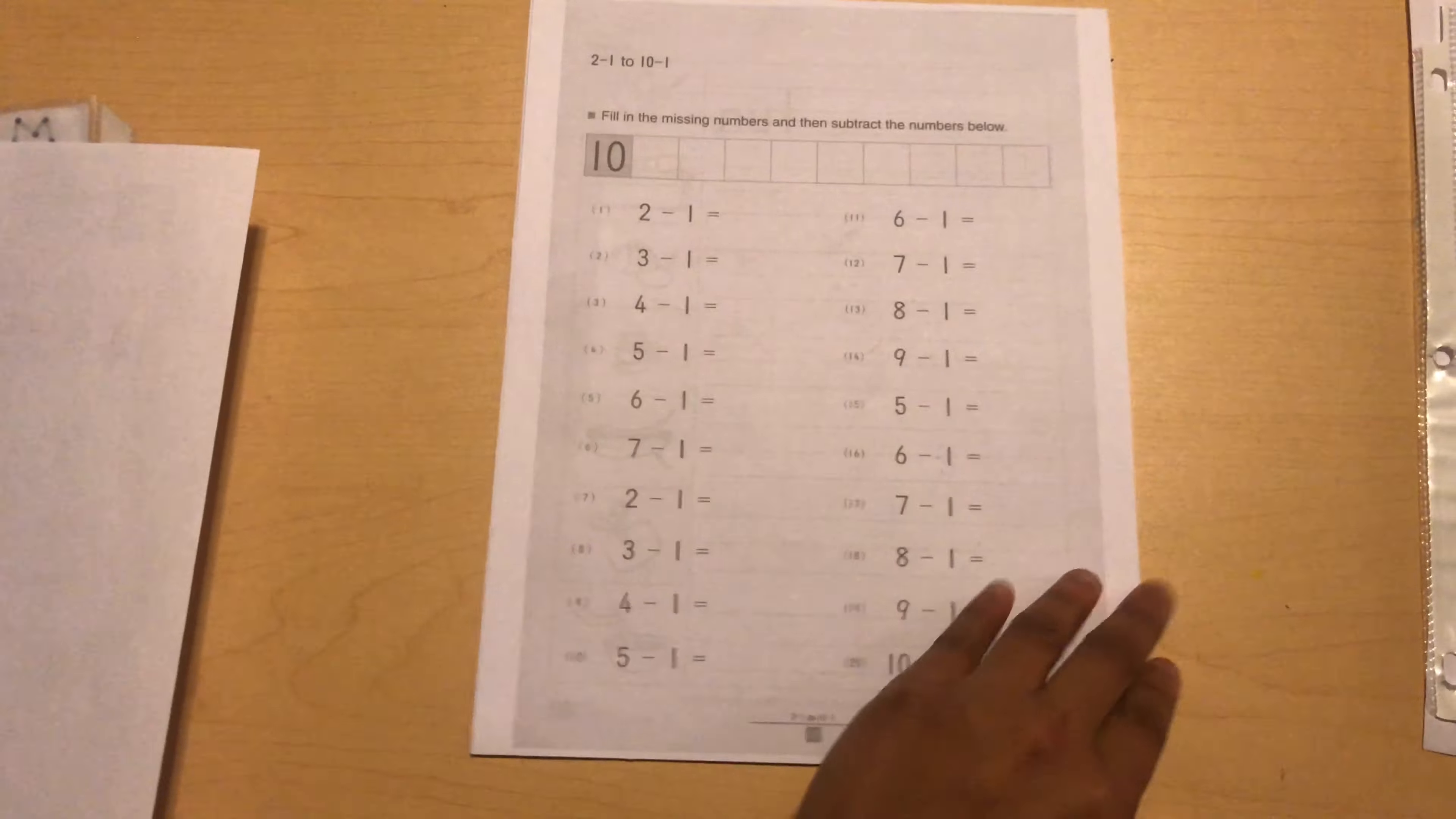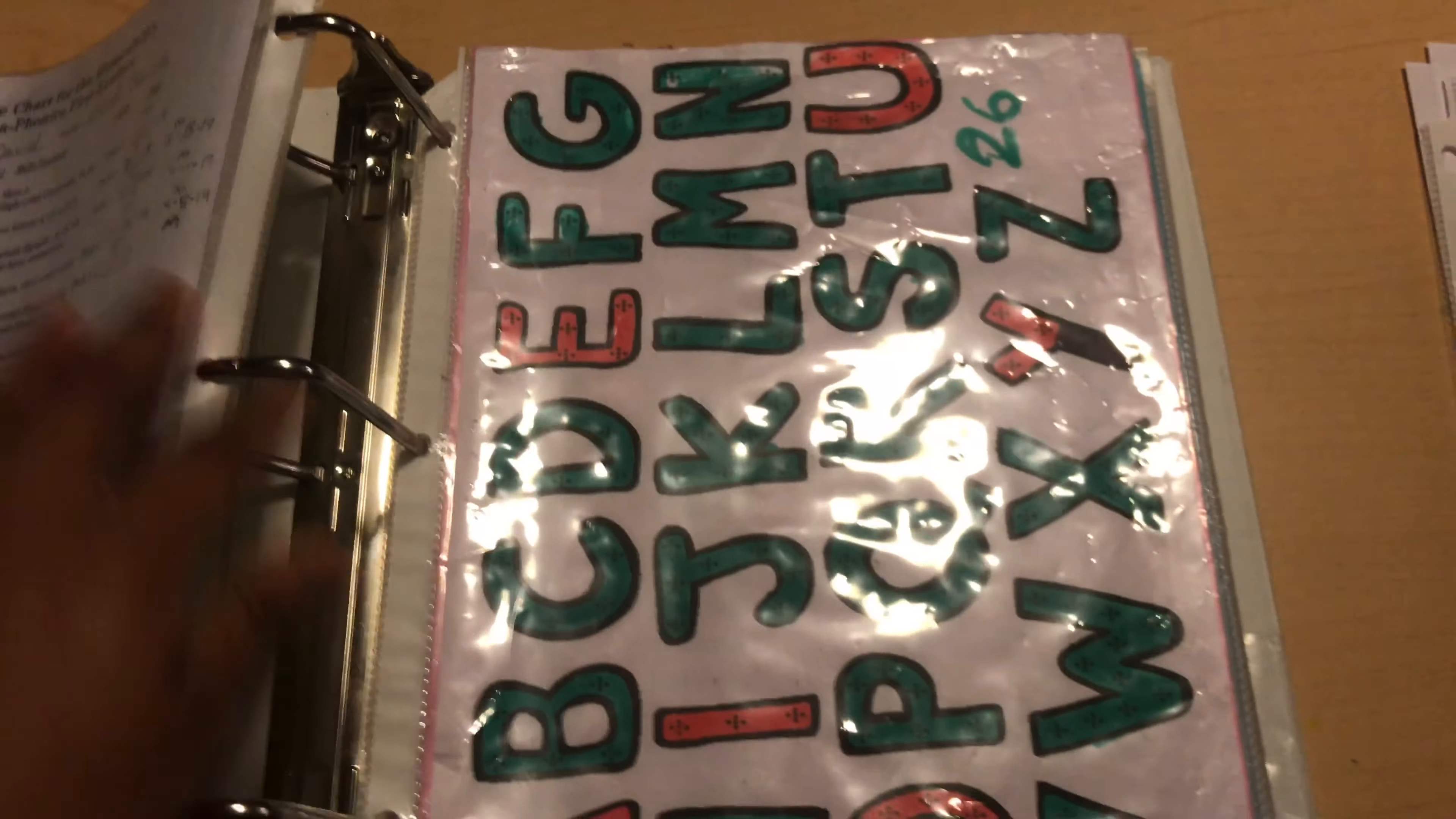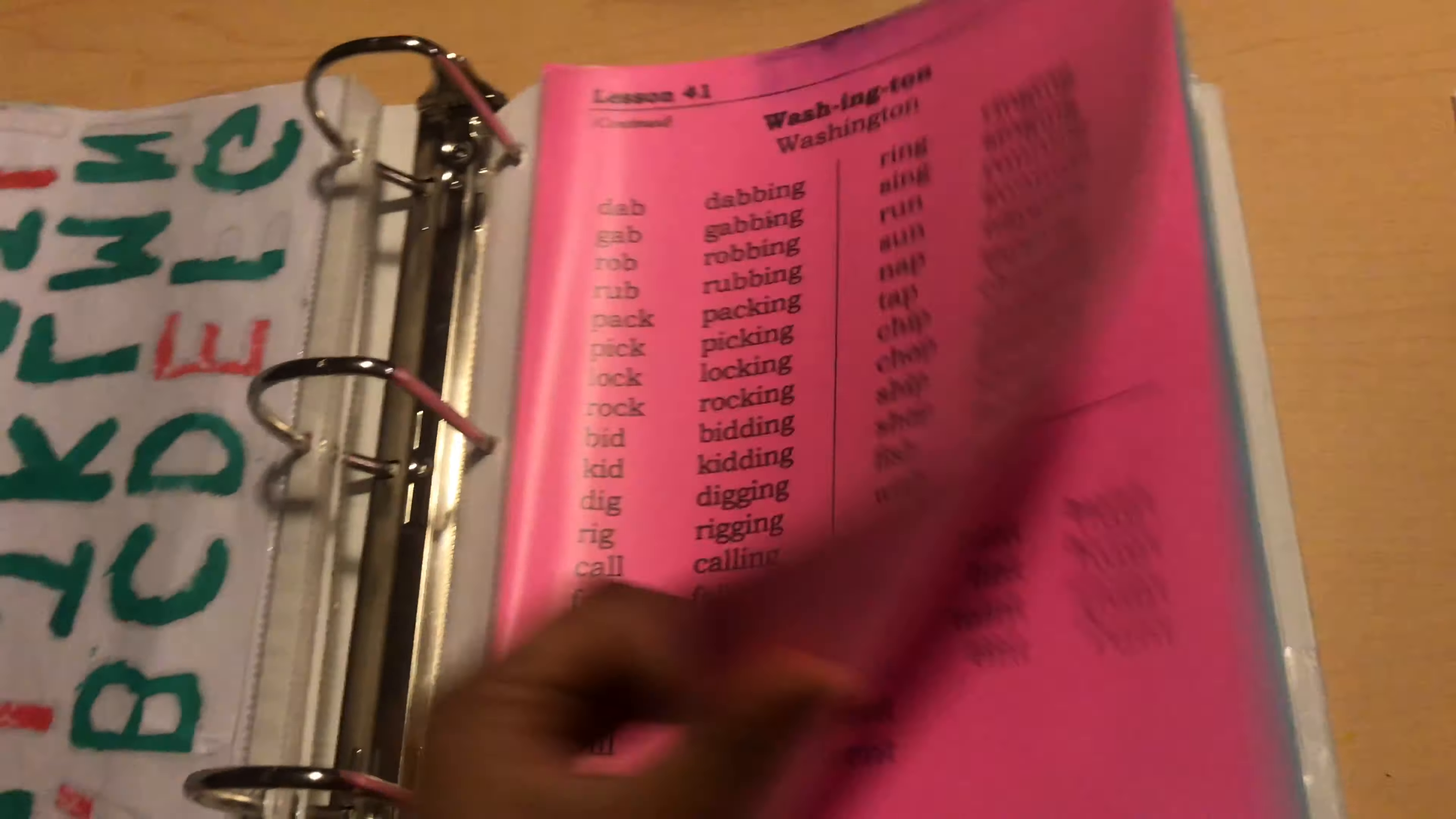And then she's going to be working on three pages from the Expo code book, so this is one, two, three.